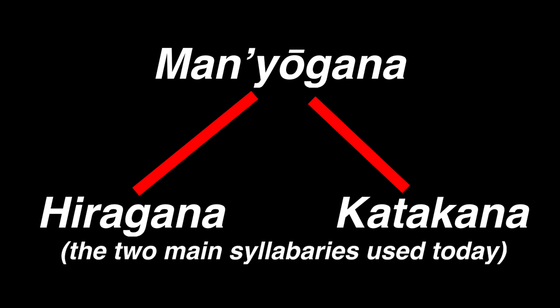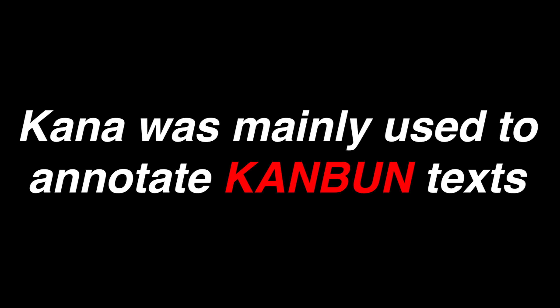Because Manyogana took a lot of effort to write, it simplified drastically in the 8th and 9th centuries into the two main syllabaries used today, hiragana and katakana, collectively called kana.